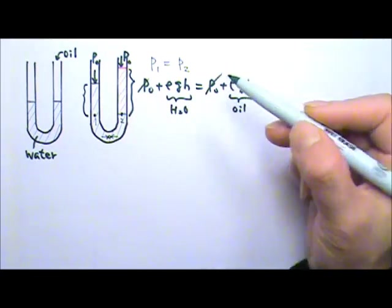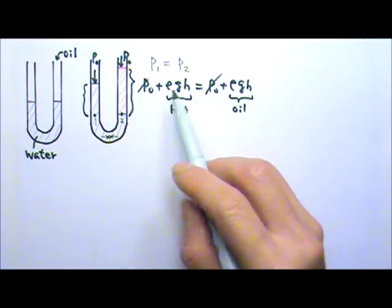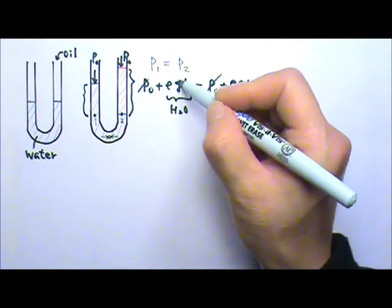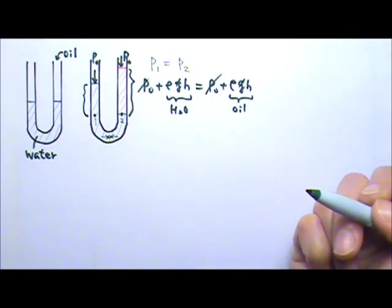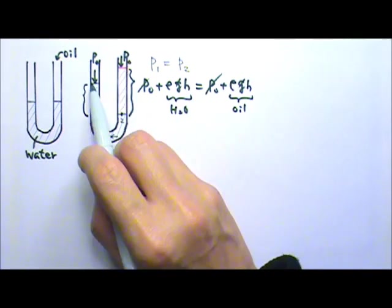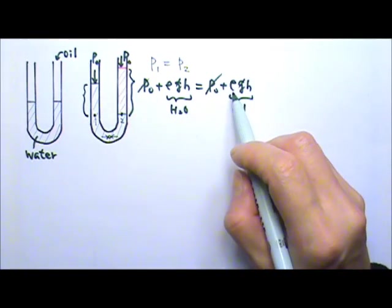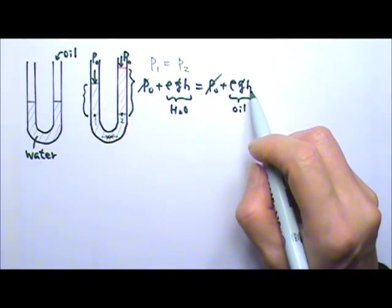P0s are the same, so they can cancel. Once the P0s cancel, we can also cancel the g. So the density of water times the height of the water column must equal to the density of the oil times the height of the oil column.